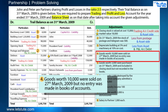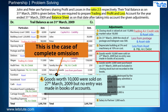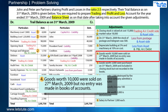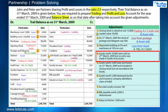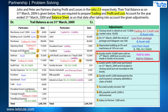This is a case of complete omission, so we have to record this unrecorded sale. The first effect is to add to sales since it hasn't been recorded, and the second effect is to add to debtors since the amount is receivable. The next adjustment: goods worth 3,000 were purchased on 31st March 2009 and included in closing stock but not recorded in the books.